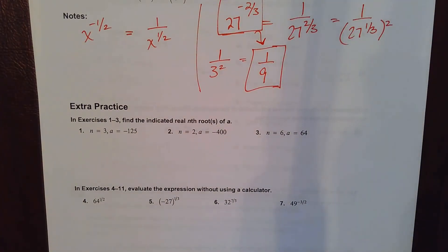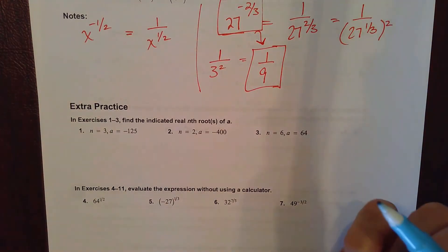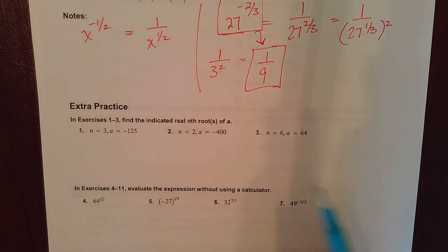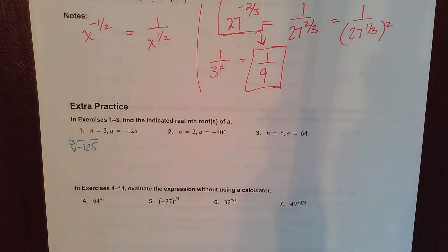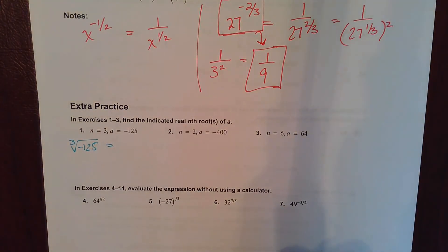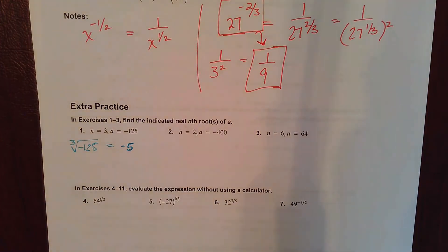Even roots of negative numbers will always be an imaginary or non-real answer. If you're taking the even root of a negative number, you're always going to get an imaginary result. It says find the indicated real nth root of a — so the third root of negative 125: here n is your root and a is what you're taking the root of. Some values you should know: 125 should give you 5, but in this case it's negative five, because the third root of a negative number is negative.